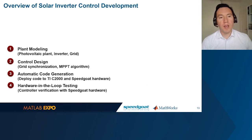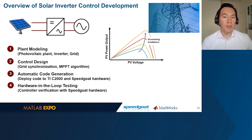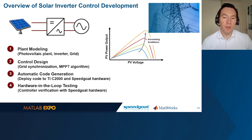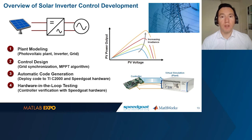The steps we'll be carrying out today consist of plant modeling of the grid, inverter, and solar panel, then the control design including grid synchronization, MPPT, current controller, and fault ride-through. Then we'll be generating code to the Texas Instruments C2000 microcontroller, and from the plant to a real-time target machine from SpeedGoat. And then we'll do hardware-in-the-loop testing.